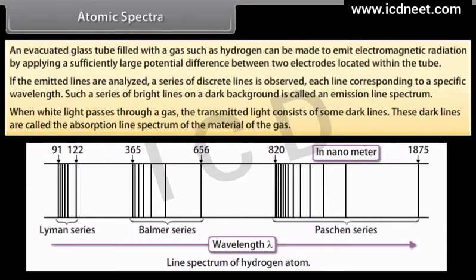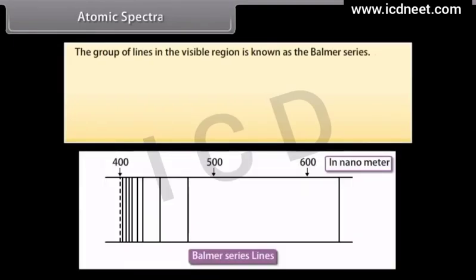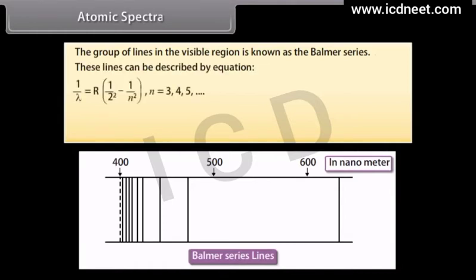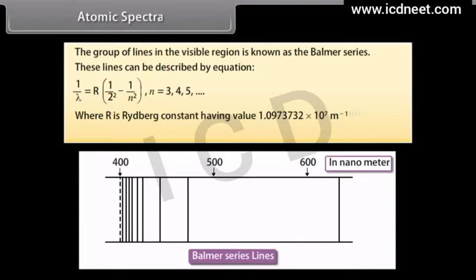When white light passes through a gas, the transmitted light consists of some dark lines called the absorption line spectrum of the gas. The group of lines in the visible region is known as the Balmer series, described by: 1/λ = R(1/2² − 1/n²), where n may be 3, 4, 5, and so on, and R is the Rydberg constant with value 1.0973732 × 10⁷ per meter.